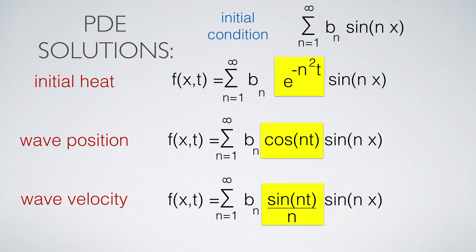In the wave equation, the equation f double prime equals lambda f is the harmonic oscillator. The solution is cos nt and sine nt. For the initial position, we get cosine nt, and with initial velocity, we get sine nt over n.